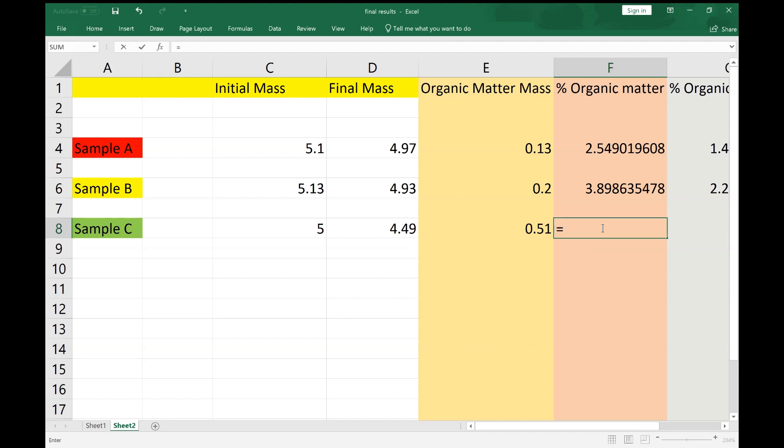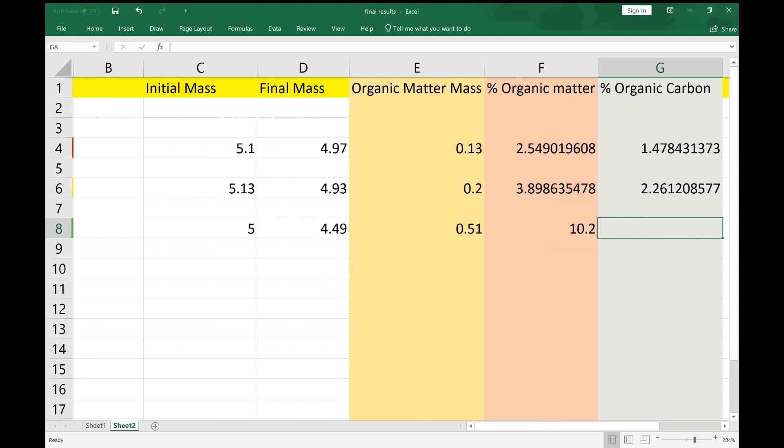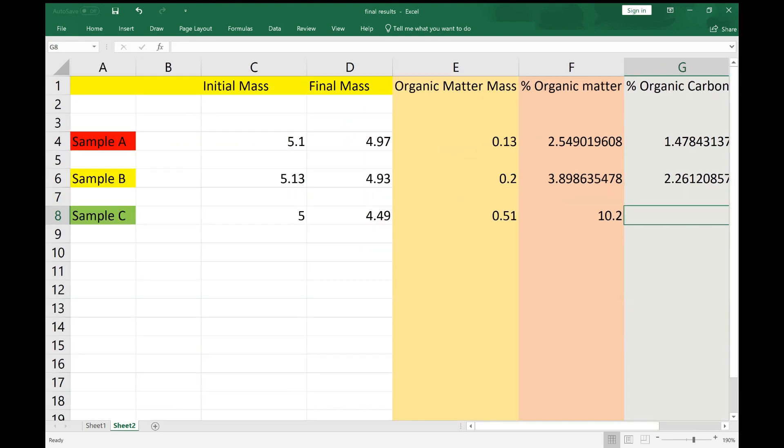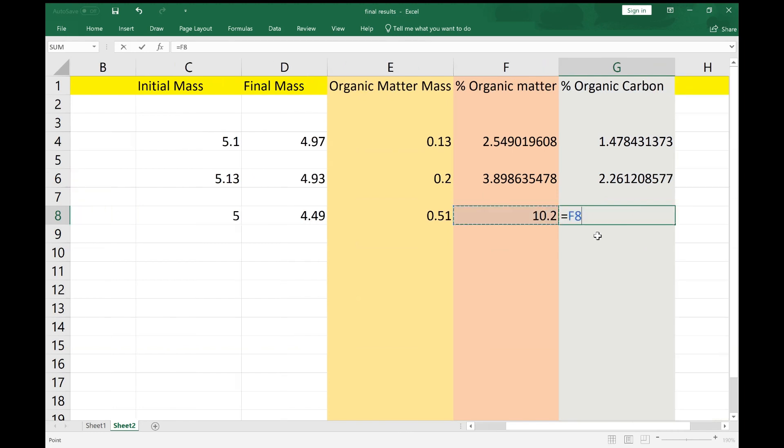And then I'm going to star, which is shift 8, by 100, and that gives me 10.2%. Then if we come over to convert that into percentage organic carbon, organic carbon is 58% of all organic mass. So I take my 10.2, I hit my equal sign again, and I'm going to multiply F8, or 10.2, by 0.58, hit the enter sign, and that gives me 5.916% organic carbon.